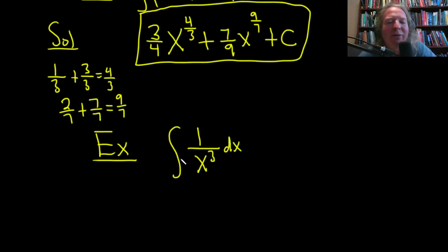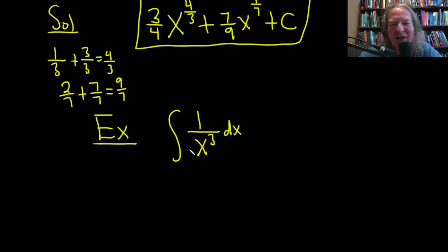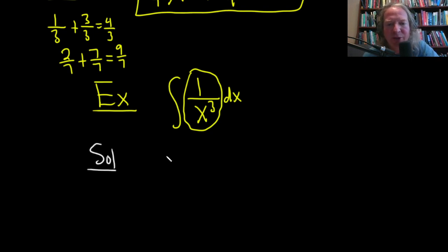With 1 over x cubed, you can't use the power rule right away. The power rule works on x to a power, but here we have 1 over x to a power. We have to rewrite the integrand — that's what the expression being integrated is called. We bring the x cubed upstairs, making the exponent negative: x to the negative 3, dx.